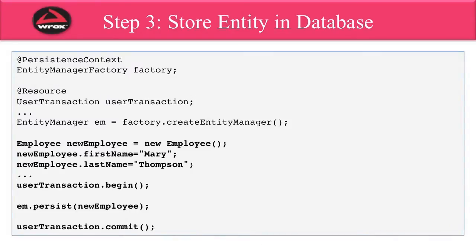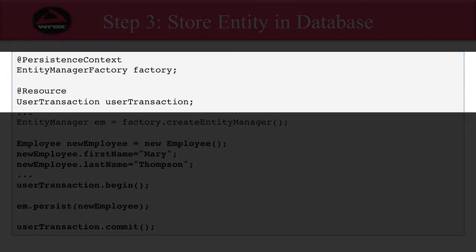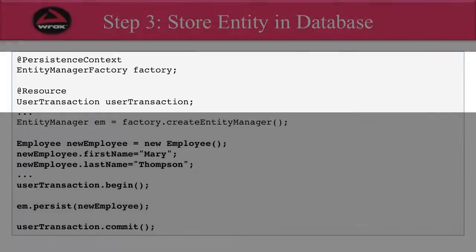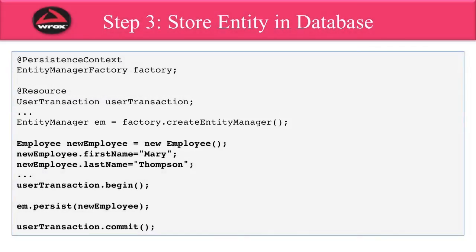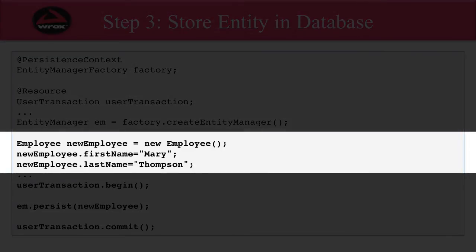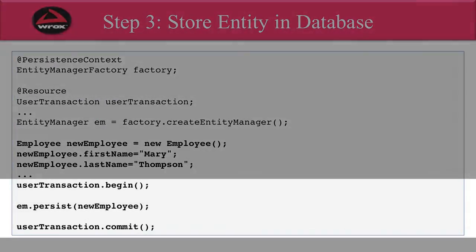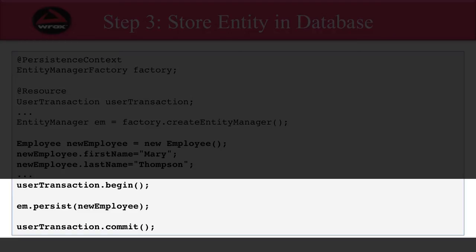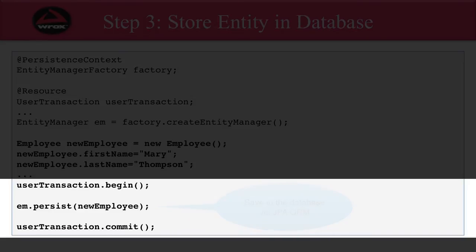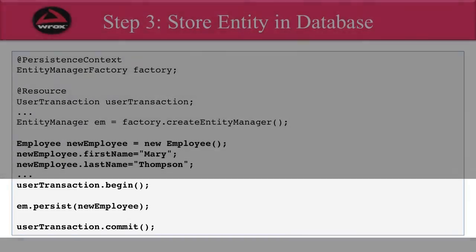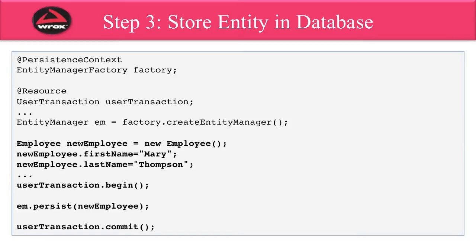Moving ahead to step three, I'll show you how to actually store your entity in the database. At the top of the code, we have our EntityManagerFactory, and then we have our UserTransaction. Then we use the factory to create an EntityManager. The EntityManager is the main item we'll use for saving and retrieving information from the database. Next, I simply create an Employee using the new keyword and set the values — this is all plain Java code. Then I begin a transaction by calling userTransaction.begin(). Then comes the real work: I make use of the EntityManager, calling em.persist() and giving it the object reference for the new employee. This goes into the JPA ORM system, which stores the information in the database based on the mappings we defined earlier. Finally, I call userTransaction.commit(), which commits all the changes to the actual database.